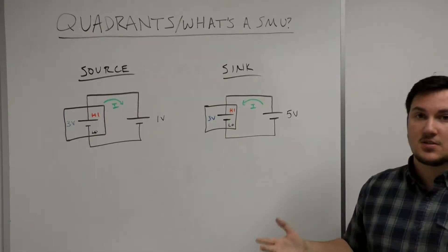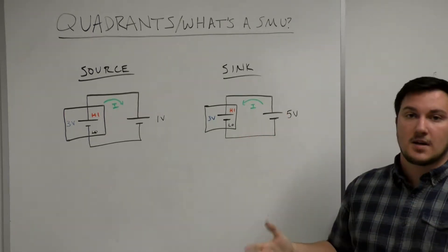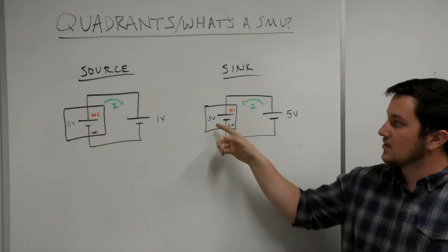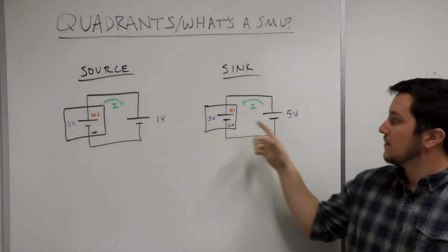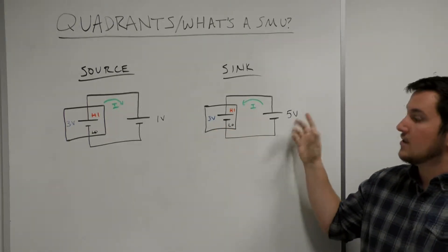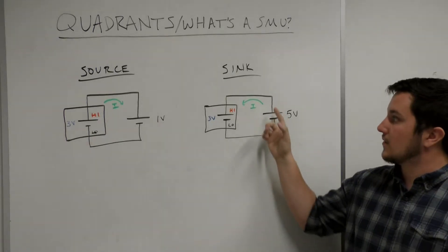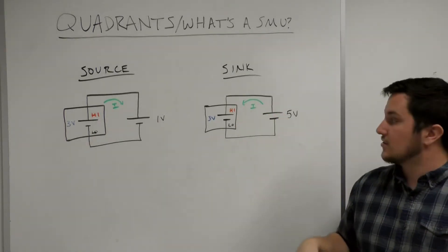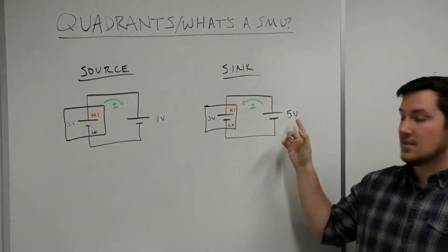With sinking, the opposite is true, and current is flowing into the more positive terminal of the instrument. We still have our instrument sourcing 3 volts, but this time into a 5 volt battery. So as you can see, current is flowing from the battery into the instrument high, and so this is discharging the battery.